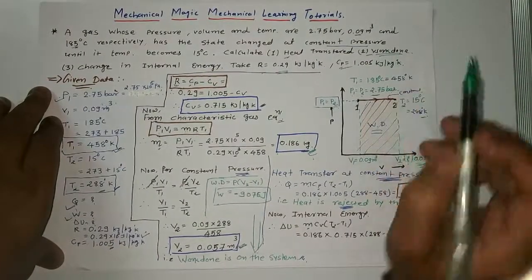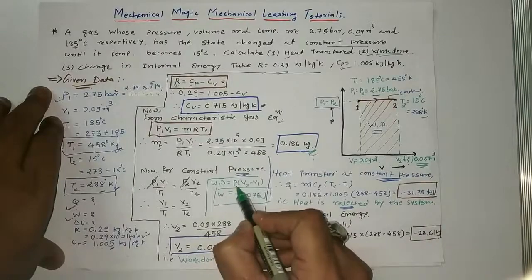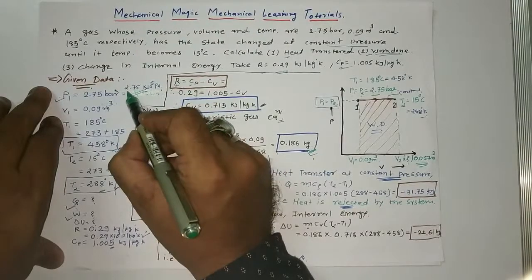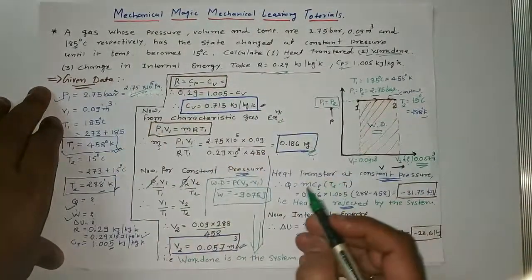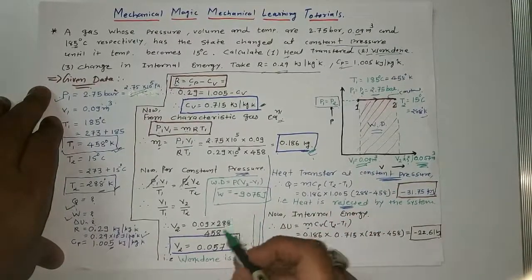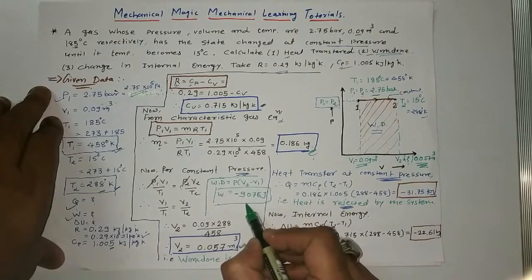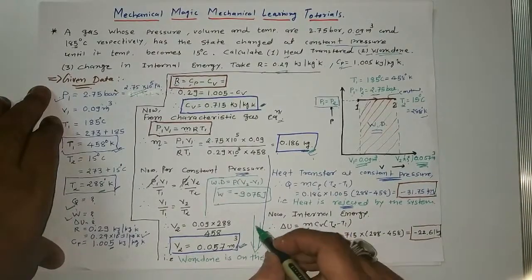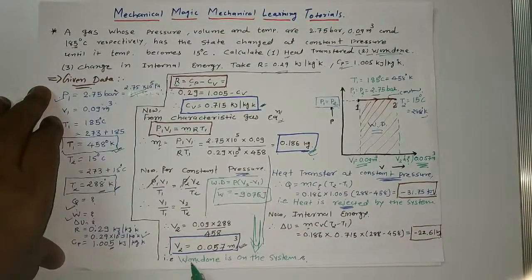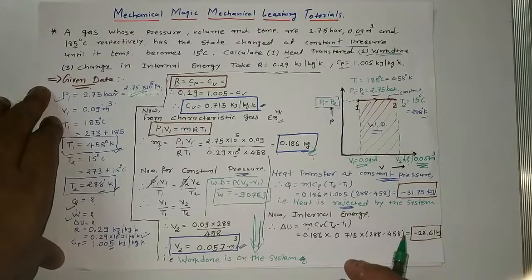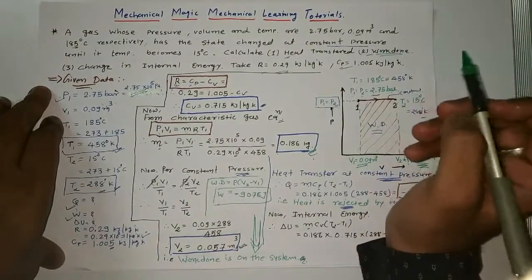For work done by the system: W equals P into (V2 minus V1). Substituting P equal to 2.75 into 10 raised to 5 Pascals and the volumes, we get the answer minus 9076 joules. The negative value indicates that work is done on the system.